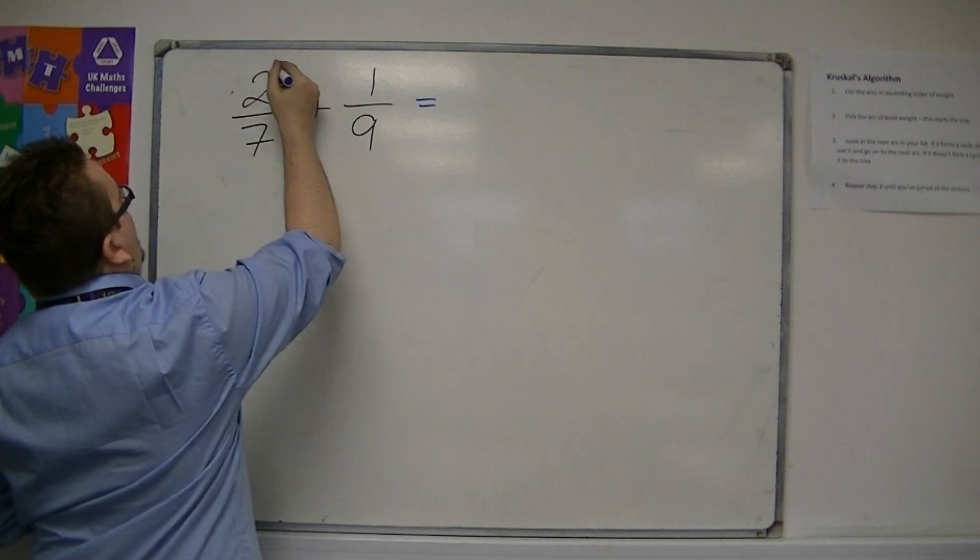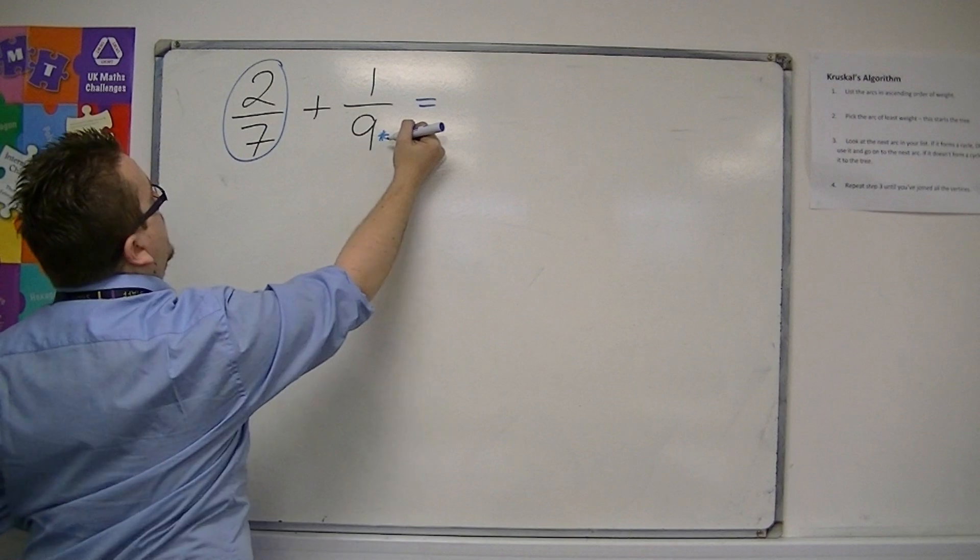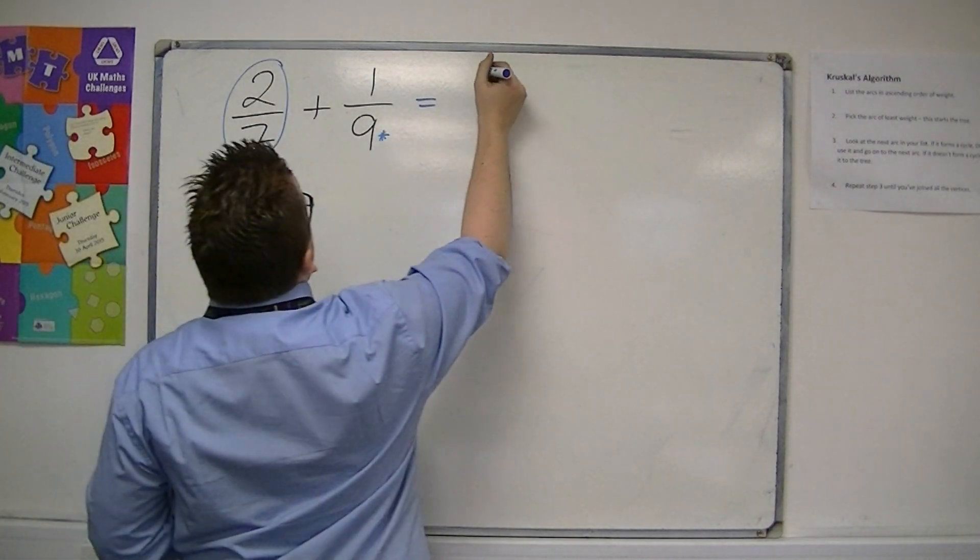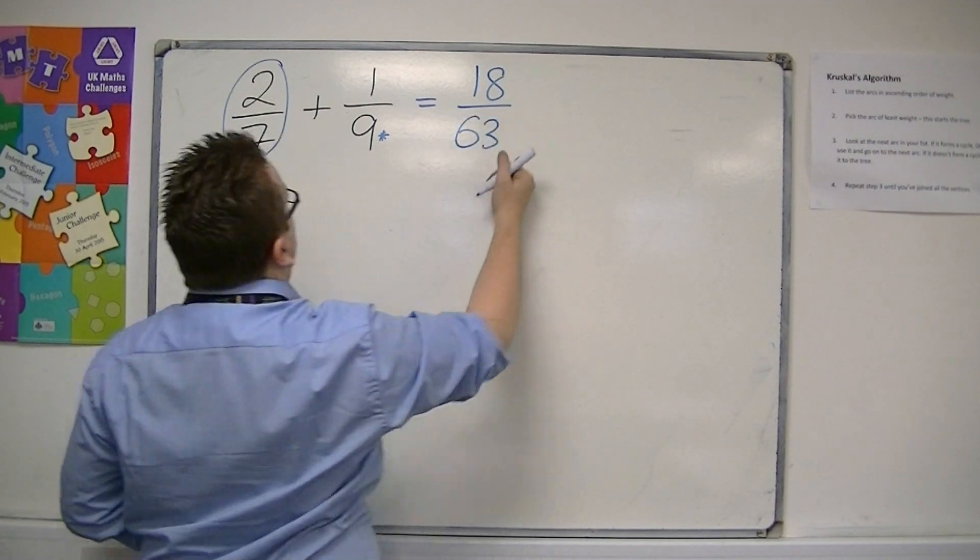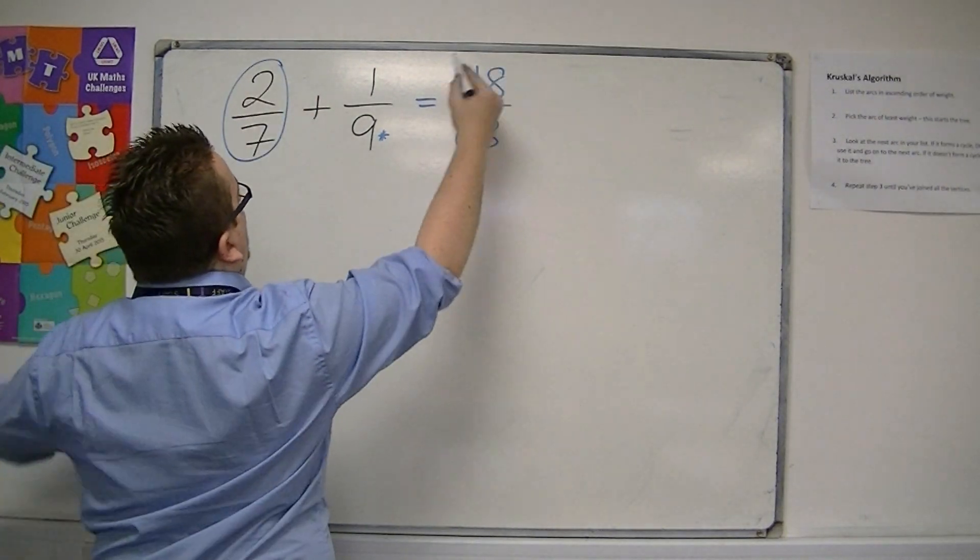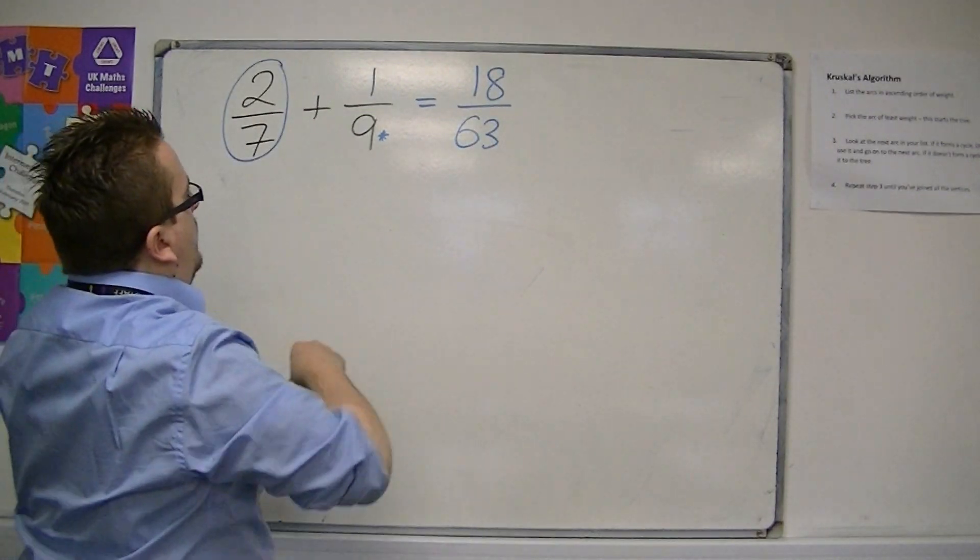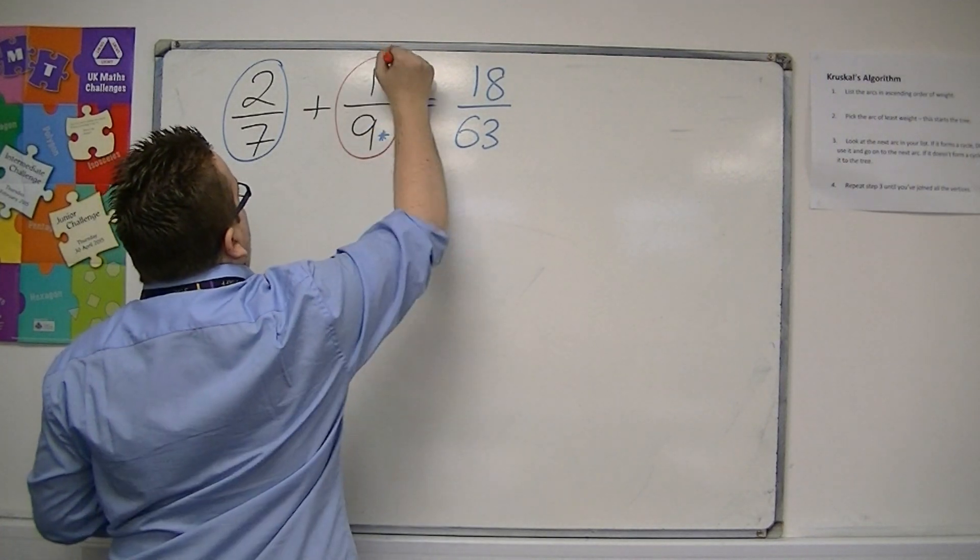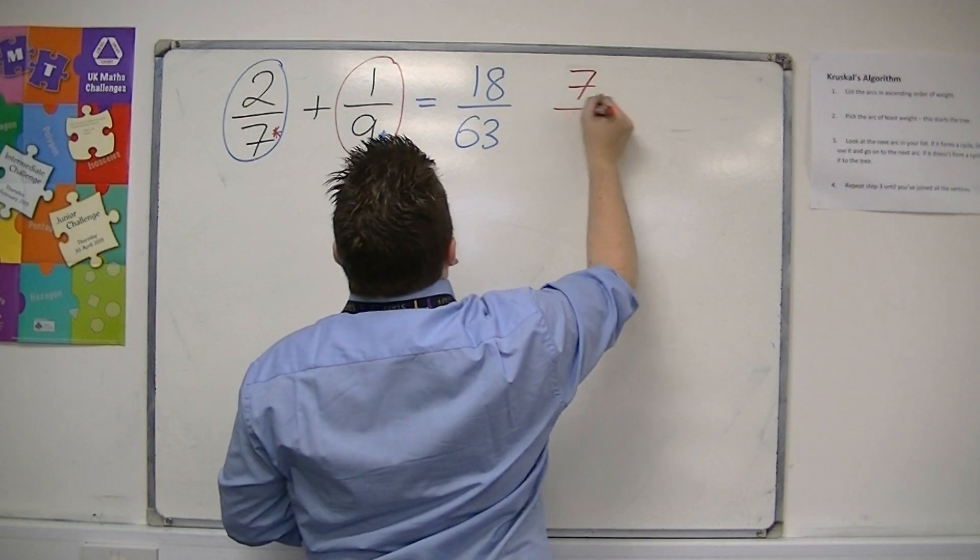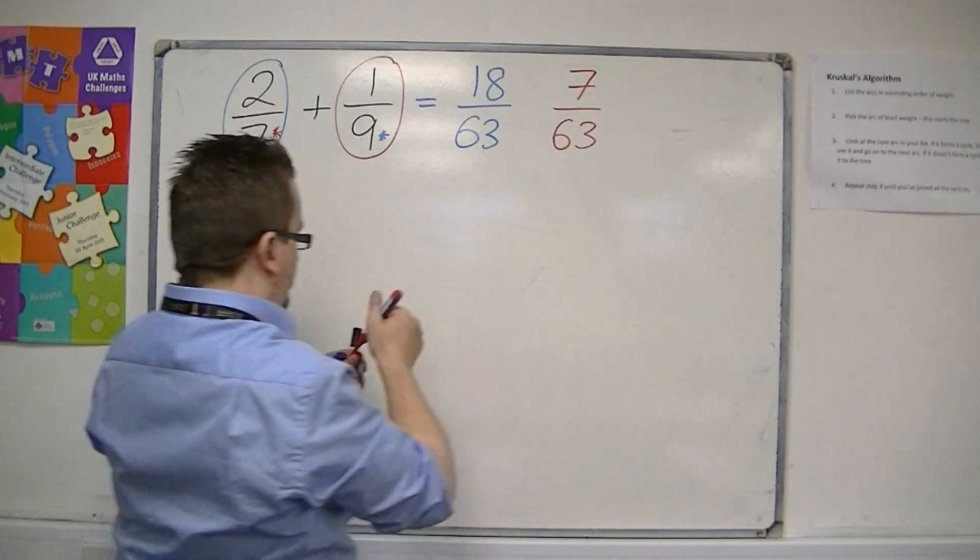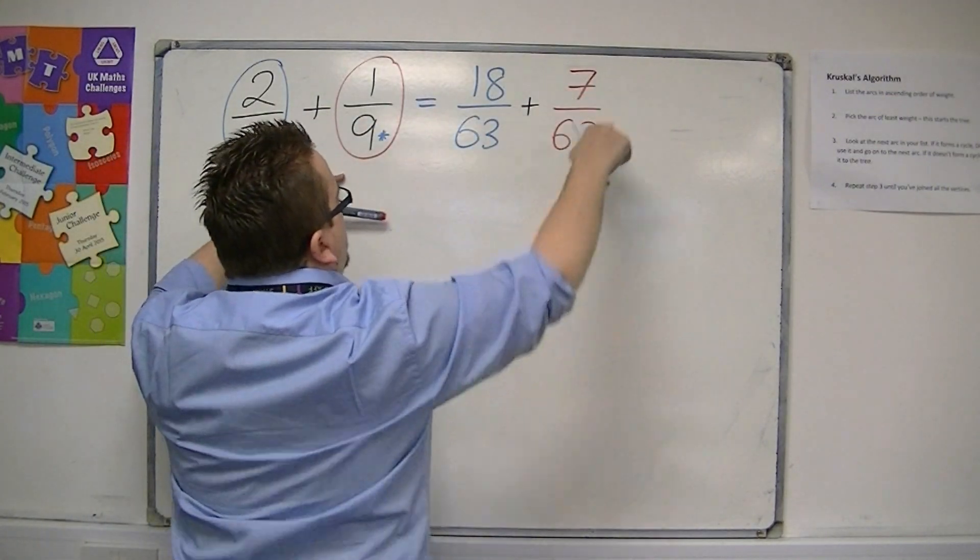So 2 over 7, if you multiply both of these by the 9, top and bottom, then you get 18 over 9 times 7 is 63. So these two fractions are equivalent to one another. Then if you multiply the 1 and the 9 by the 7, then you get 7 over 63.